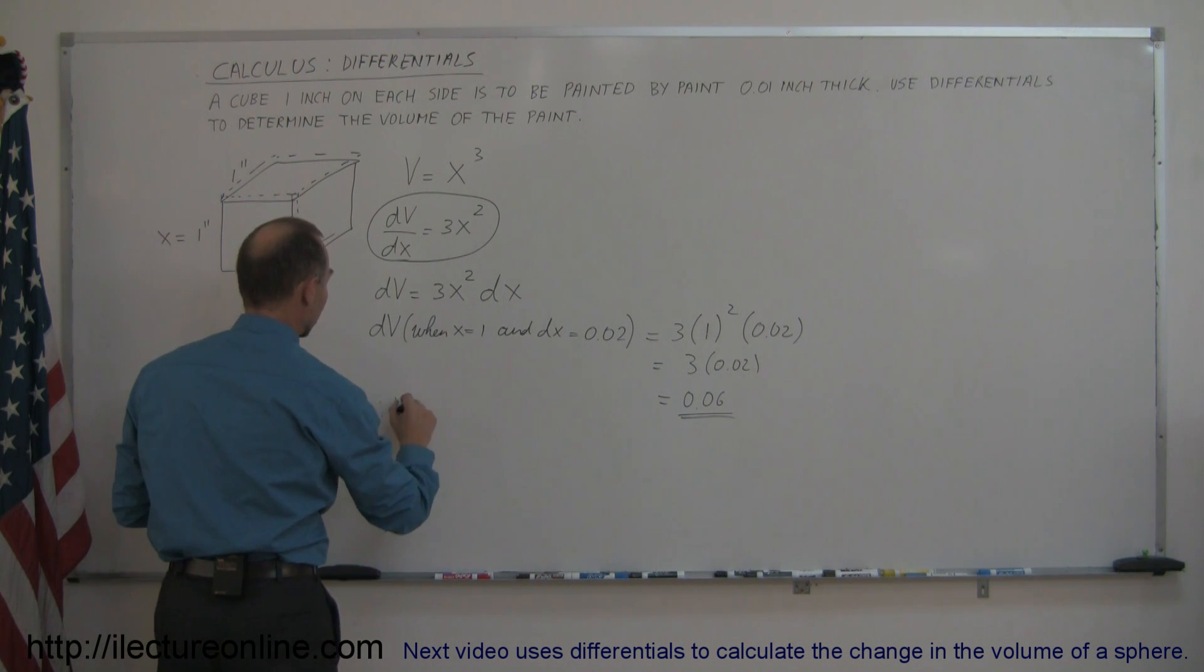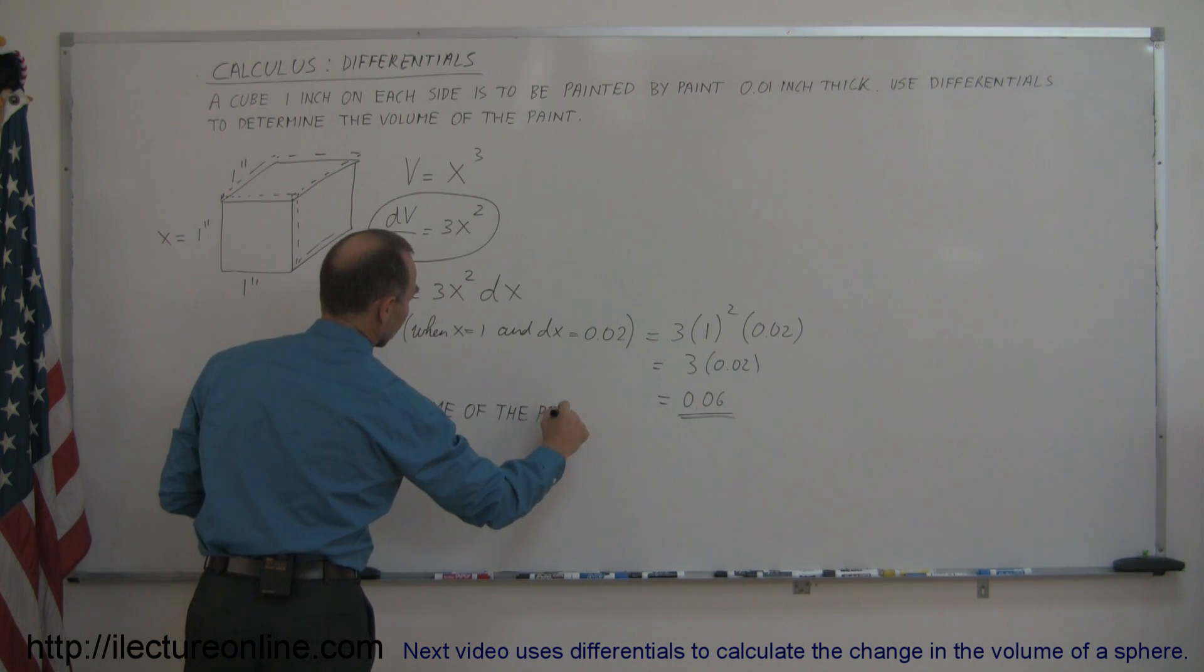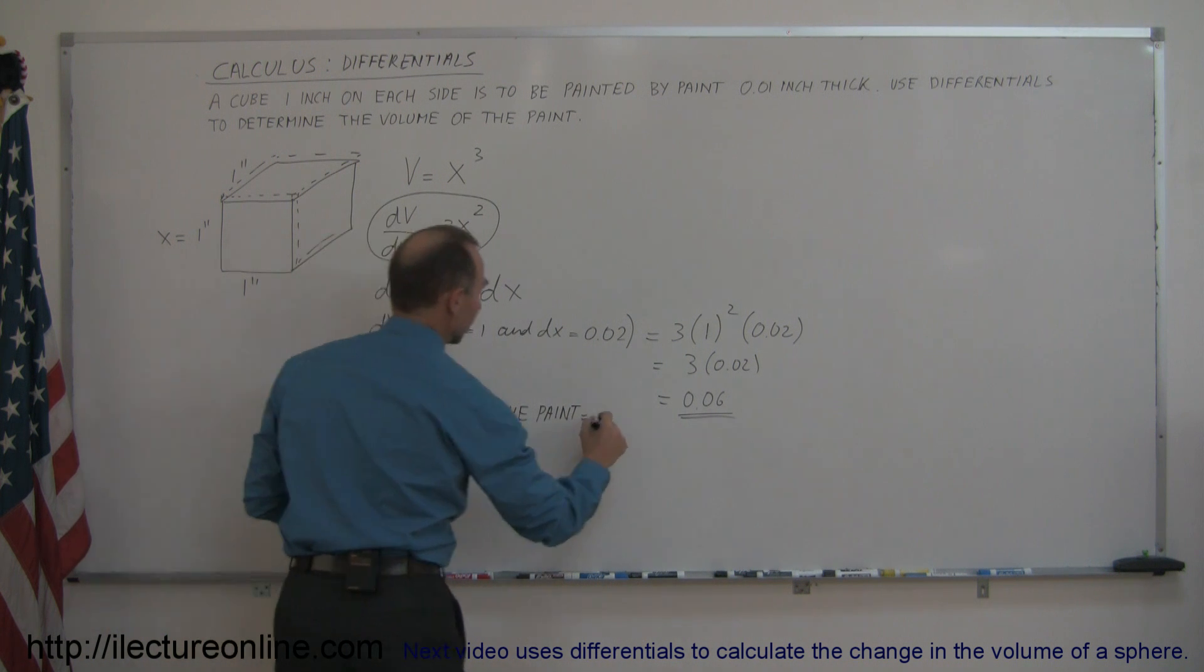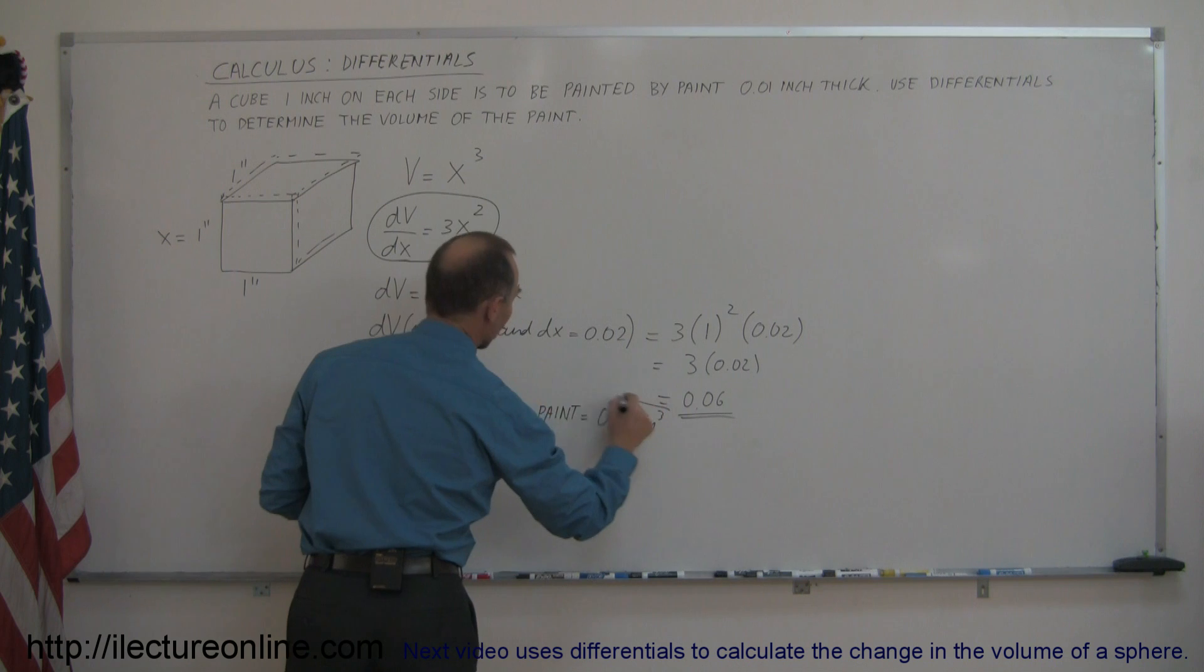So therefore, the volume of the paint is equal to 0.06 inches cubed, since the units we're working with were inches.